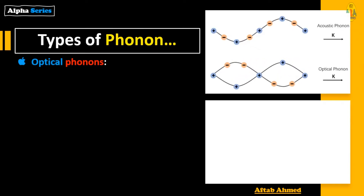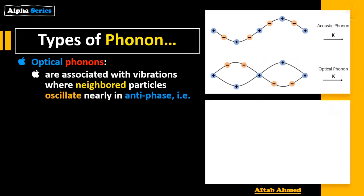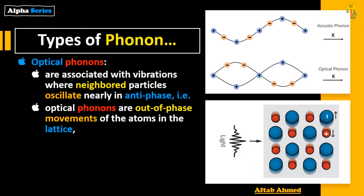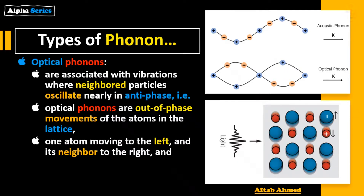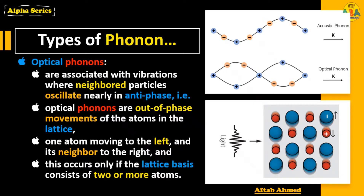Optical phonons are associated with vibrations where neighboring particles oscillate nearly in antiphase — that is, out-of-phase movements of the atoms in the lattice, with one atom moving to the left and its neighbor to the right. This occurs only if the lattice basis consists of two or more atoms. Light is used to generate such phonons.